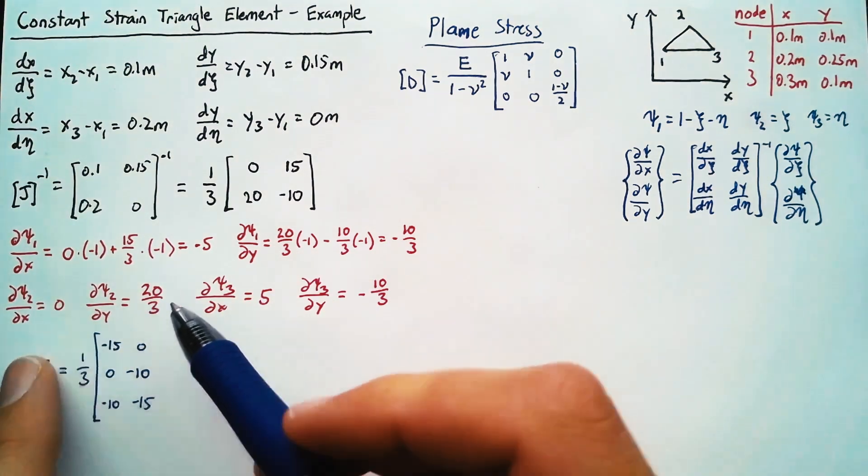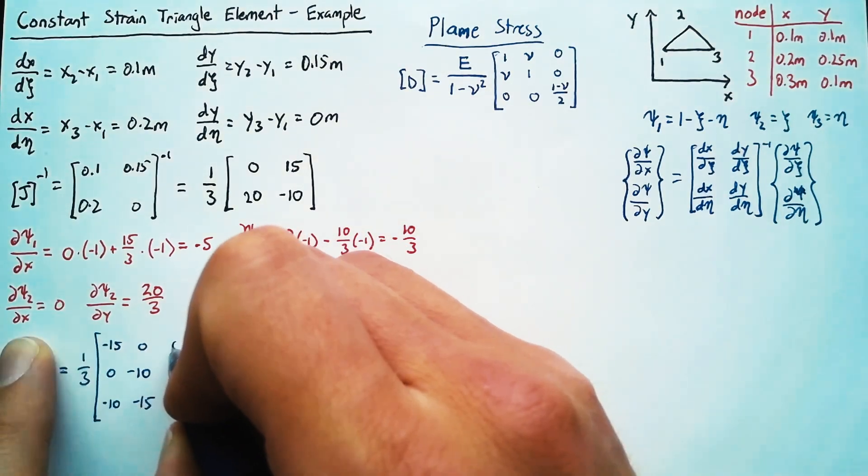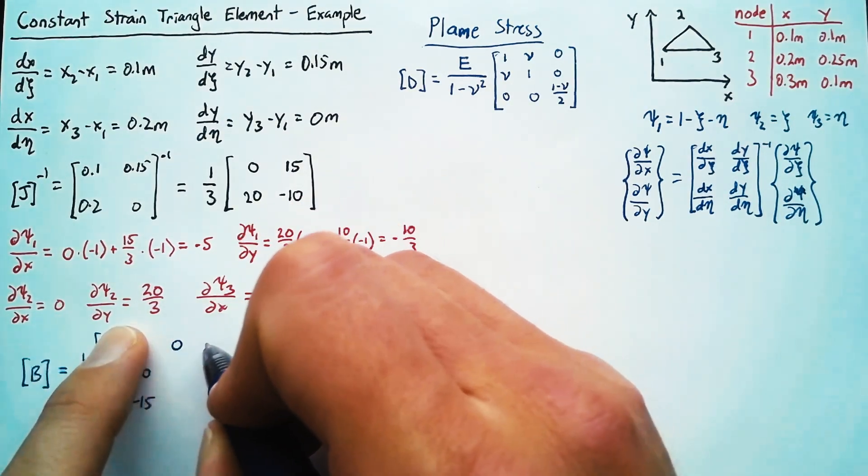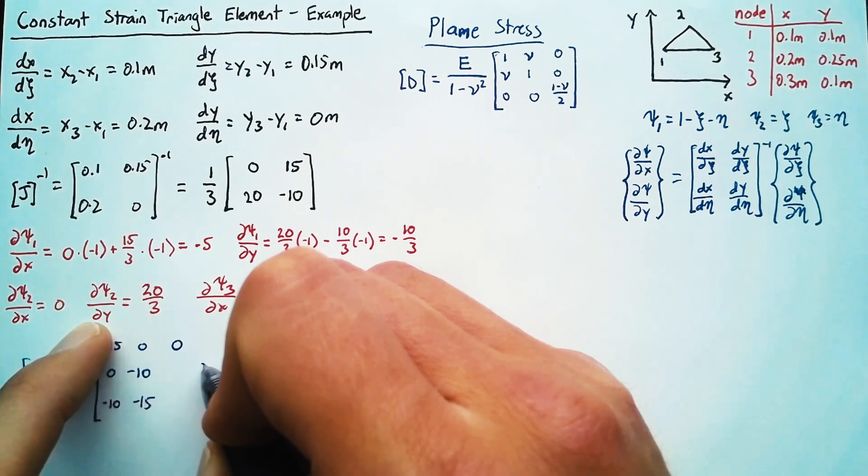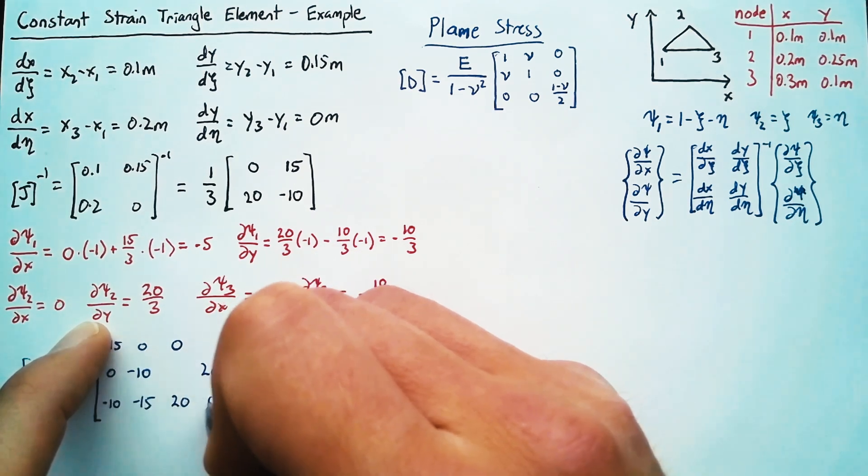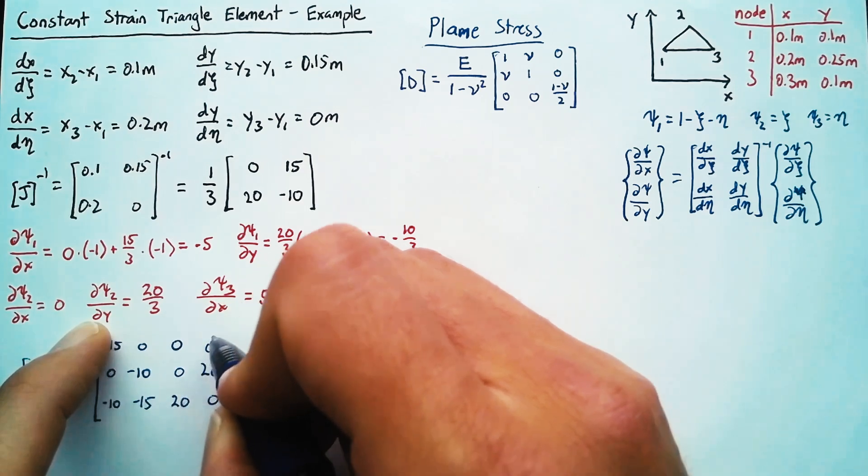And then we move to psi 2. So the derivative with respect to x here is 0, with y is 20, and so we'll have 20 here and 0 here and the 0 in the two spots there.